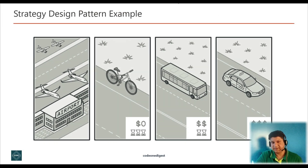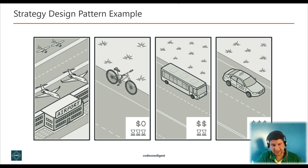For example, if you want to add new functionality you can do so by adding a new algorithm without touching existing code. Let's understand the strategy design pattern with a real-world example. Imagine you want to go to the airport and you can catch a bus, order a cab, or go by bicycle. These are your transportation strategies — you pick one depending on factors such as budget or time constraints.